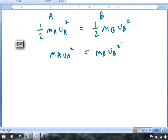Let's place the masses on both sides and the velocities on both sides. So we have mA divided by mB is equal to vB squared divided by vA squared.